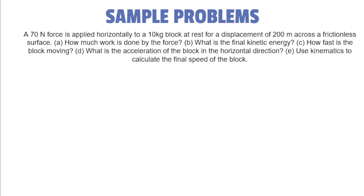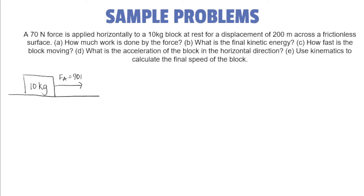Okay, first let us draw what the situation is all about. So we have here, on a surface, a block which has a mass of 10 kilograms. And then we apply a horizontally applied force, which is equal to 70 newtons. So the displacement of the box from its original position is 200 meters, and it is a frictionless surface.